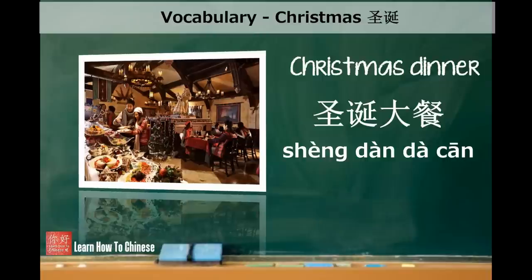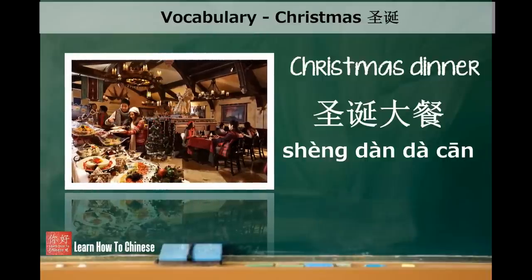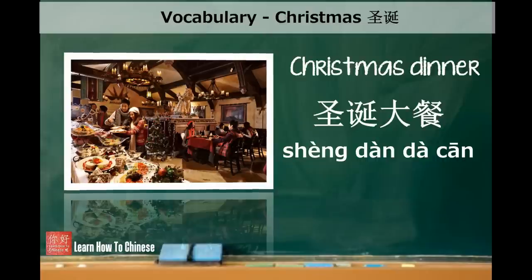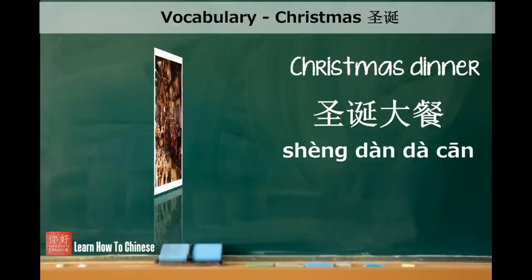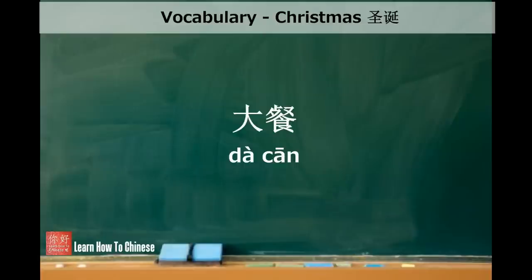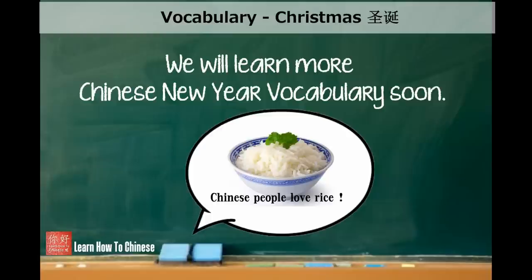Last is Christmas dinner. This is an important meal for family to get together and have lots of food. So in the Chinese translation, we call it Christmas big dinner — 圣诞大餐. 圣诞 is Christmas, 大 means big, and 餐 means meal. A big meal on Christmas is called 圣诞大餐. Interestingly, it is not typical for Chinese people to say 大餐 for Chinese New Year dinner — we use the word rice instead of dinner. We will learn how to say Chinese New Year dinner in Chinese soon.